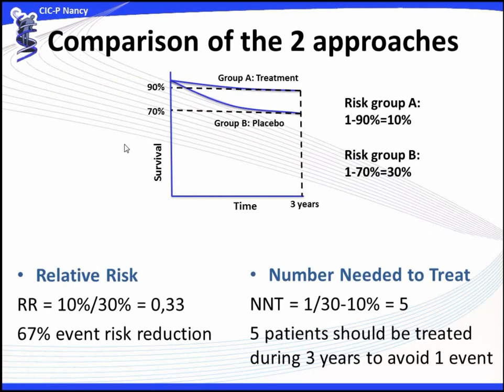Comparing the two approaches using the same example: group A and group B have the same incidence of events, with the treatment group risk of 10% and placebo group risk of 30%. On a relative scale we have a 67% event risk reduction, while on an absolute scale we have an absolute risk reduction of 20% and a number needed to treat of 5. This illustrates how different the two approaches can be.